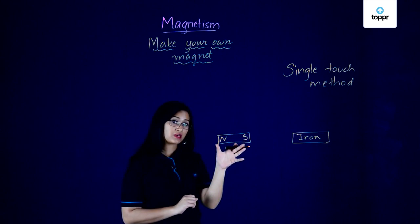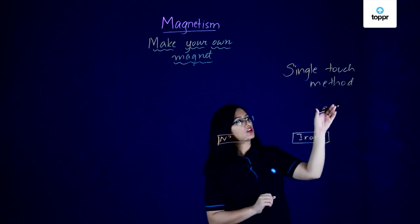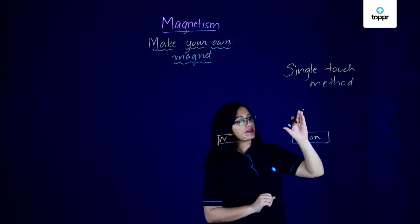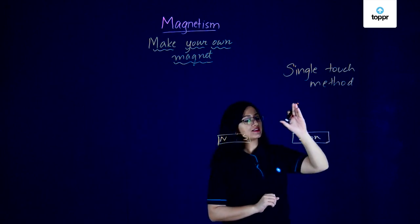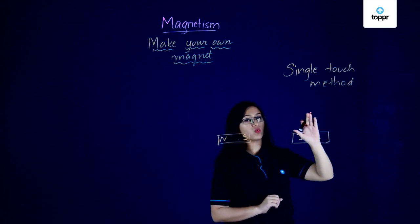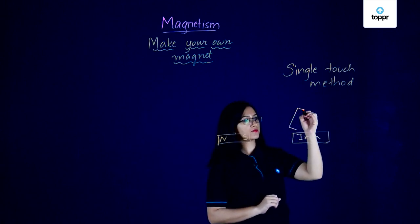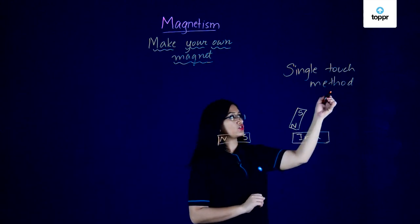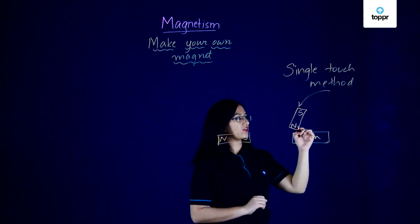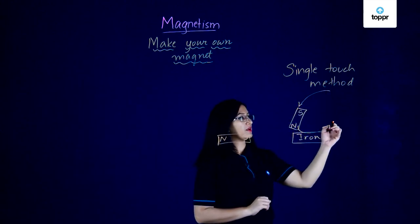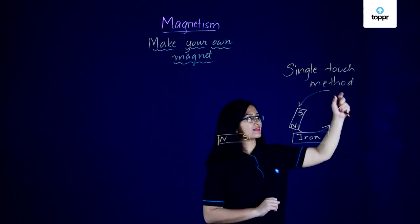You take the permanent magnet and simply rub it or stroke it against the iron or the substance that you want to magnetize in one direction. You start over here on one end. Let's say we have north and south like this. You move it in this direction across the top and pull it out like this.